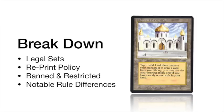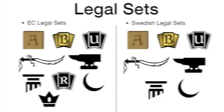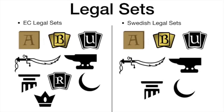Let's first look at the breakdown. When we compare EC and Swedish we're going to look at four factors: the legal sets in each of the rule sets, the reprint policy, the ban and restricted lists, and notable rule differences. We'll start off by looking at the legal sets.